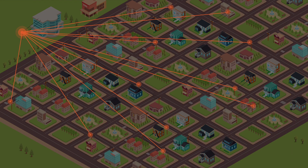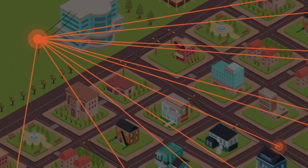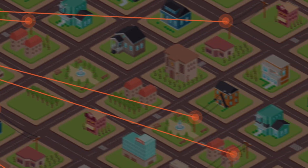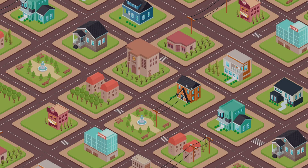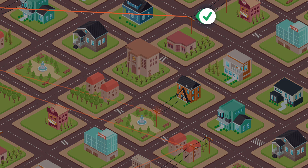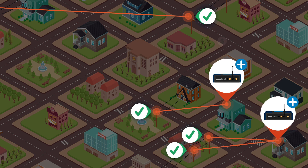Until now, point-to-multipoint radios were the only option for grid communications and control. In this network, connections are beamed to long distances from a central base to remote grid devices. Buildings, trees, and topographical variations can cause some connections to be better than others. More access points and infrastructure are the only way to work around these obstructions.